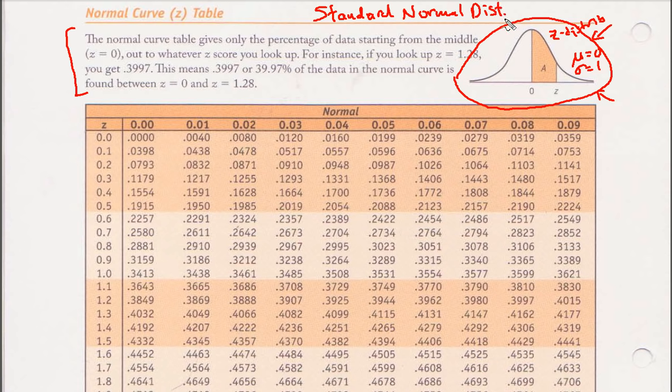So there's many normal distributions, each distinguished by mu and sigma, the mean and the standard deviation. When mu is zero and sigma is one, the normal distribution is called the standard normal or Z distribution. And that's what all the tables are showing you. Notice these Z values here.